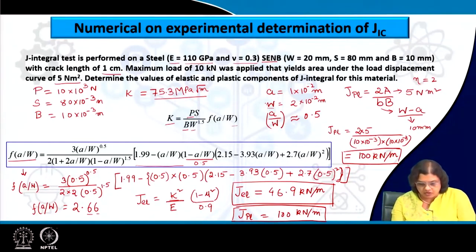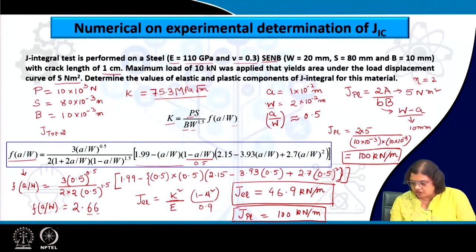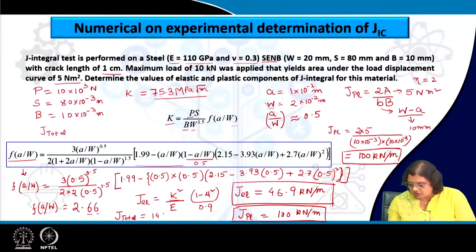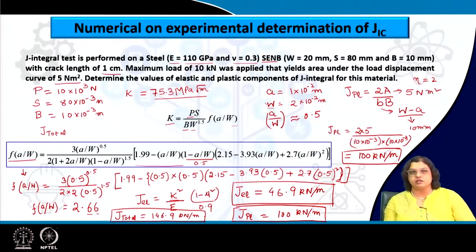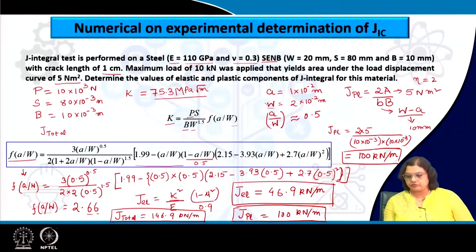Overall J total will be the summation of the two terms: J_elastic + J_plastic = 46.9 + 100 = 146.9 kilo Newton per meter.